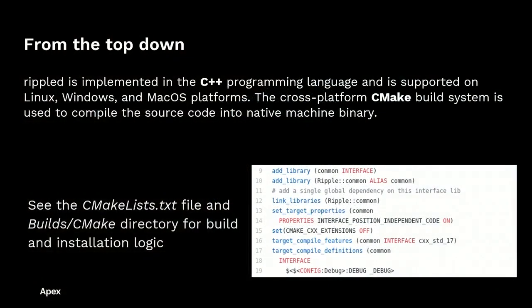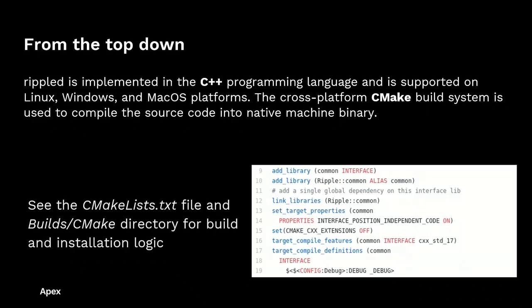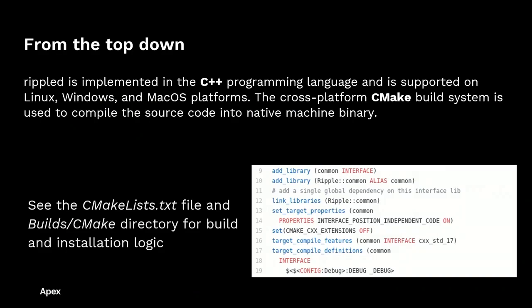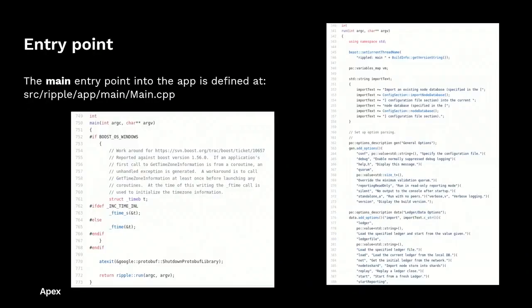Let's break on through to the other side of the XRPL. RippleD implements the XRPL standards. It's written in C++, one of the most popular programming languages in the world, and is supported on Linux, Windows, and macOS. The cross-platform CMake build system is used to compile the source code into binary. See the CMakeLists.txt file as well as the build CMake directory for the installation logic. Here we see the definition of the core rippled component as well as some compiler definitions. C and C++ applications start their execution at the main entry point, defined under source/ripple/app/main/main.cpp. Here we see some initialization logic, after which the run method is called — run parses the command line parameters and we go from there.